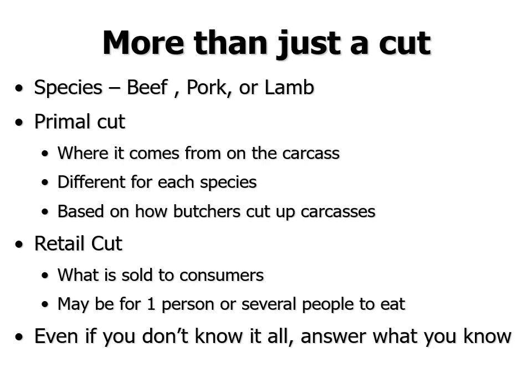When you're identifying retail cuts for a judging contest, there are three different things you have to identify. First, you have to identify the species — whether it's beef, pork, or lamb. Next, you have to identify where on the carcass it comes from, and that's called the primal cut or sometimes the wholesale cut.